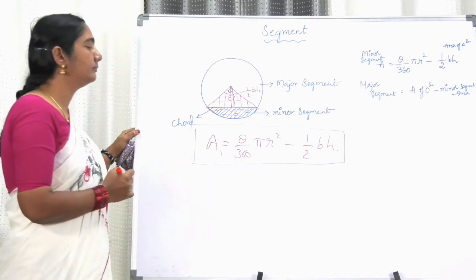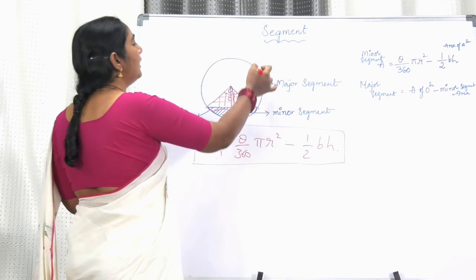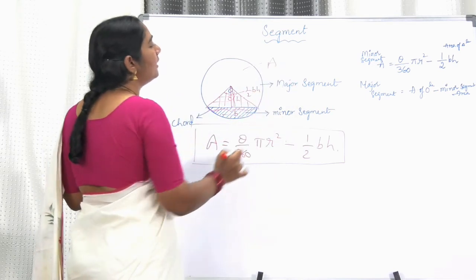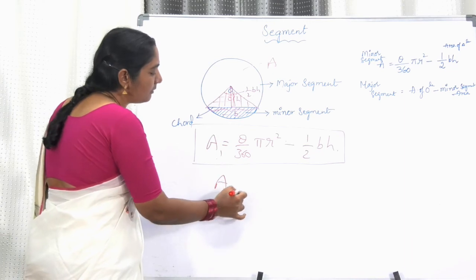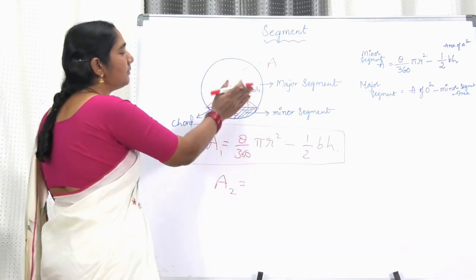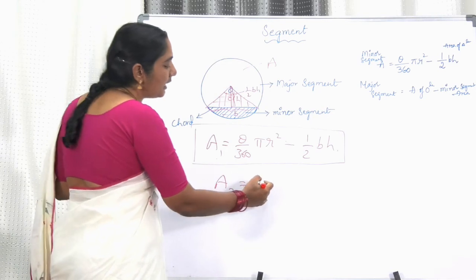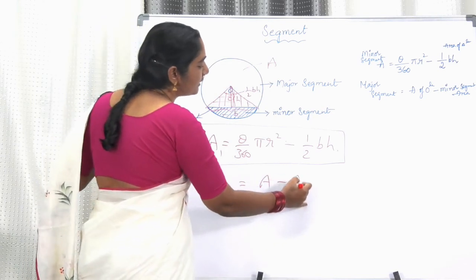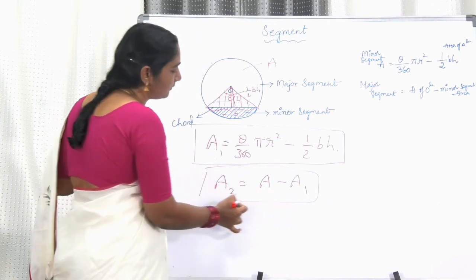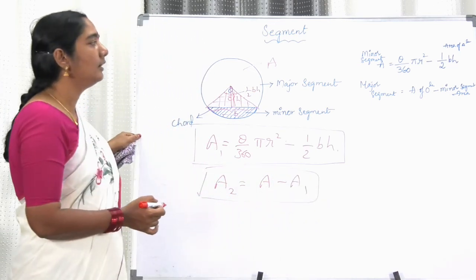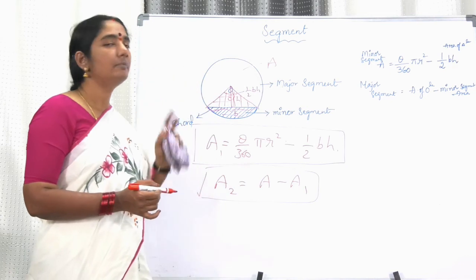The area of the complete circle, let it be A. To find out the area of the major segment — which is the larger part — it is nothing but the area of the circle minus the area of the minor segment, giving the area of the major segment. In that way, you can find out the area of the major segment.